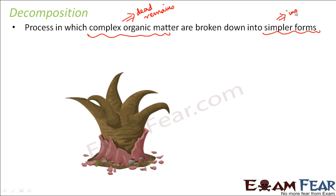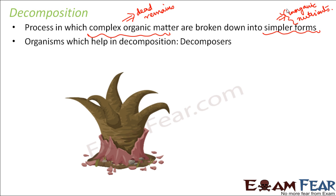That complex organic matter is broken down into simpler forms. Simpler forms could be inorganic materials like nitrogen and phosphorus, which act as nutrients for the plant, or it could be inorganic substances like nitrogen gas which is released back into the atmosphere. So basically, complex organic matter is converted into simple inorganic substances.